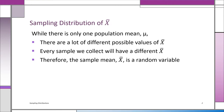Think about it a minute. You could have taken a different sample and would have had a different x-bar, and yet another sample would give yet another value of x-bar. You could have hundreds or thousands of samples, each one with a different value of x-bar. There's only one population mean mu.